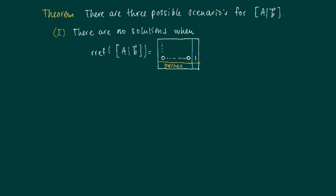Why is this? On the left-hand side we get zero times x1 plus zero times x2, and so on, plus zero times xm equals some constant one. This cannot hold for any vector x, so we get an inconsistent system.